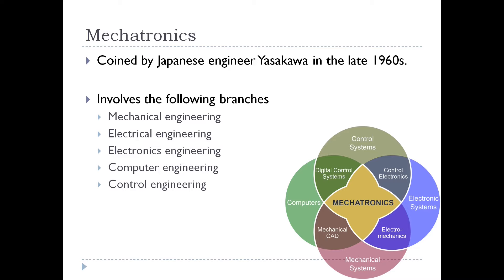Electrical systems are concerned with the behavior of current and voltage. Electrical motors, generators, transformers, relays, circuit breakers, and switches are the electrical components mostly used in mechatronics systems.